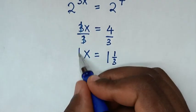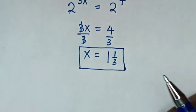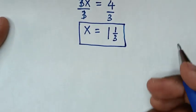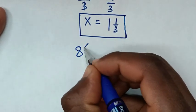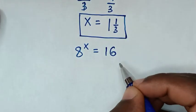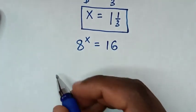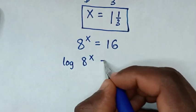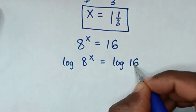So this is the correct answer for the value of x in this problem. Or, to solve using another method: from our problem, which is 8 power x is equal to 16, we will apply log on both sides. So it will be log of 8 power x is equal to log of 16.